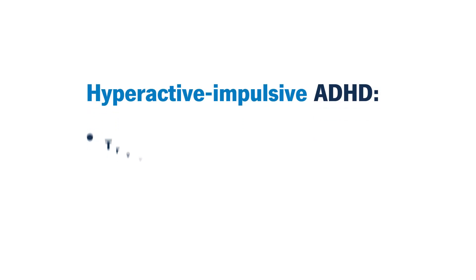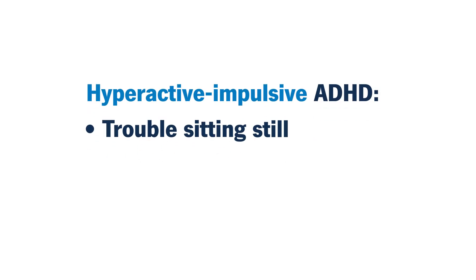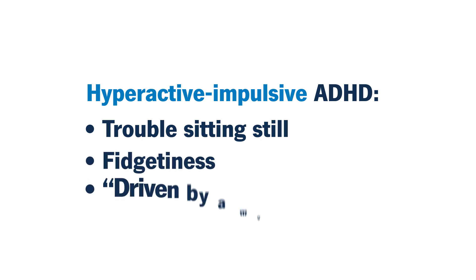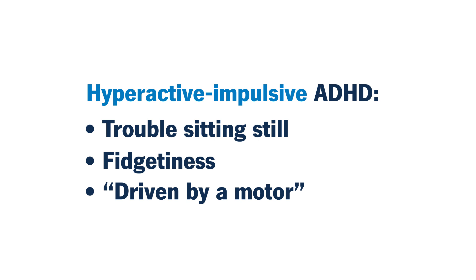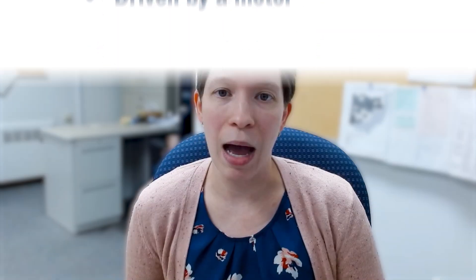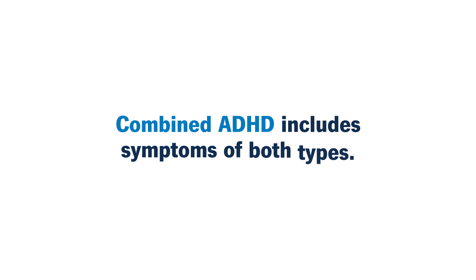There's also the hyperactive/impulsive subtype, and those kids have trouble with sitting still. They're very fidgety — they're the kids that people describe as being driven by a motor. Then you can also have what's called combined subtype, which is where you have both the inattentive symptoms and the hyperactive symptoms, and that is probably the most common subtype.